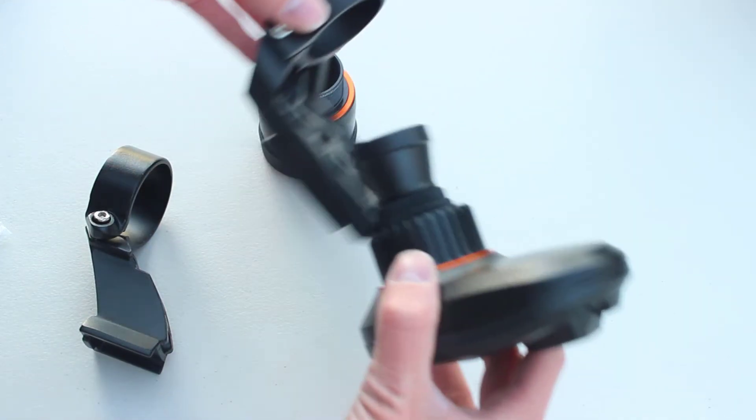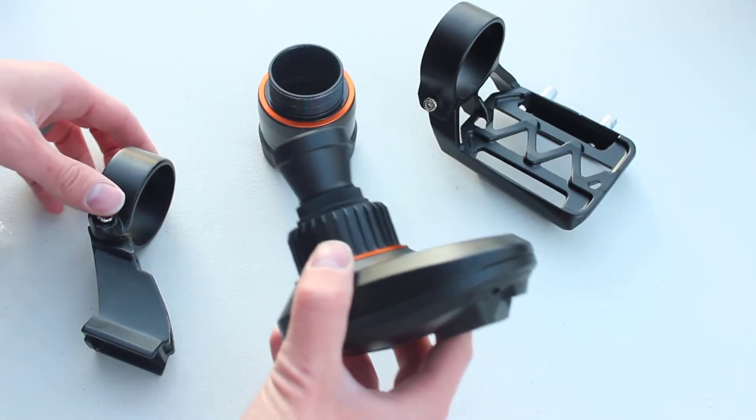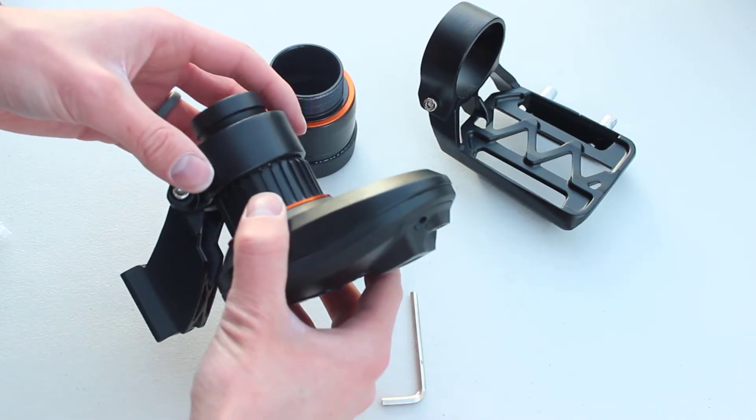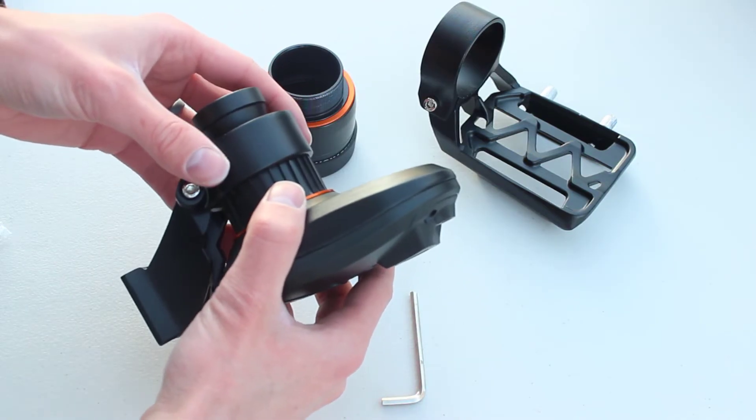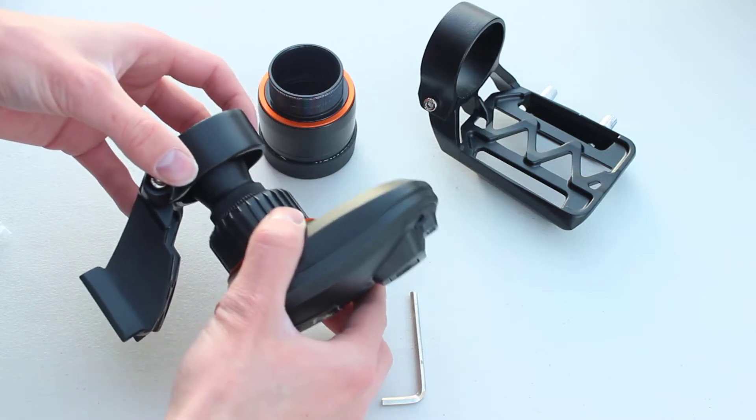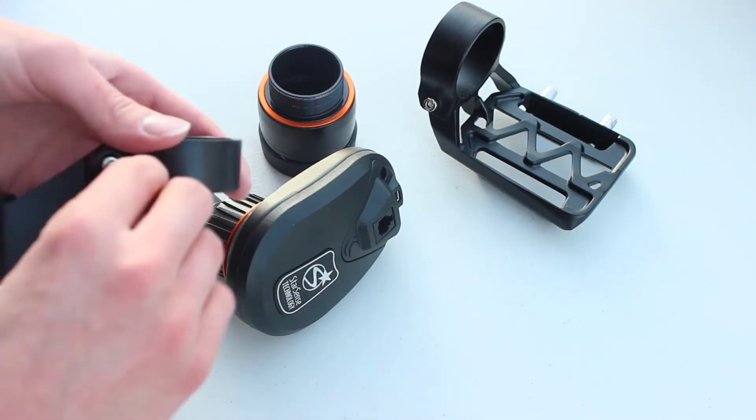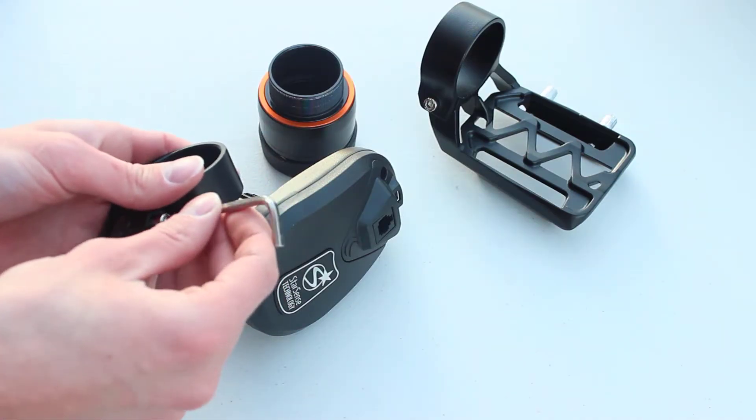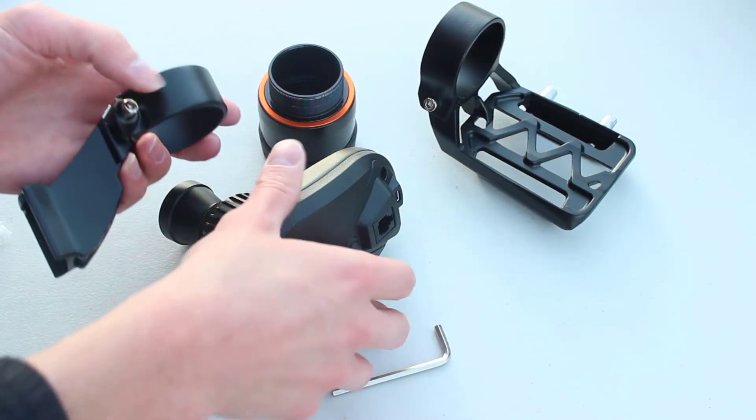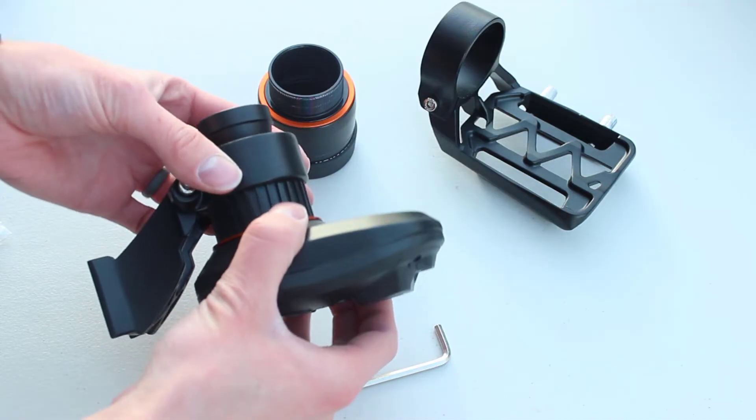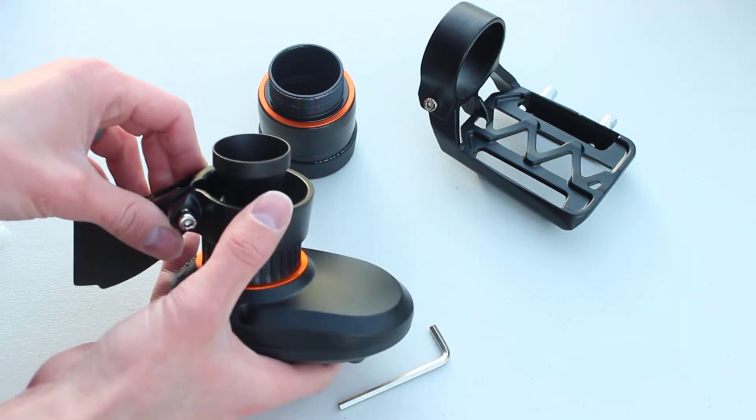And these will separate and just make sure these orange rings stay in place. Remove the StarSense from that bracket. Insert the bracket. Looks like I need to loosen that a little bit more, so I'm going to do that. We'll place this StarSense in there. Get that nice and loose.